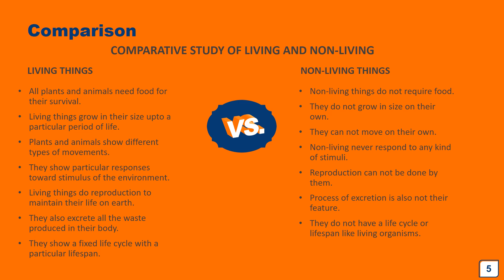Living things grow in size — the number of cells in a body increases, which leads to growth. For example, if we drop a seed into a flower pot, it sprouts into a sapling after some time, and that sapling converts into a fully grown tree after a couple of years. This characteristic of growth is shown by living things and not non-living things.